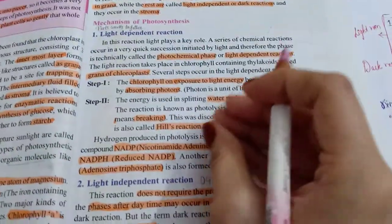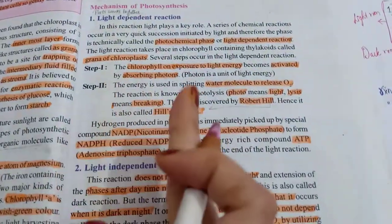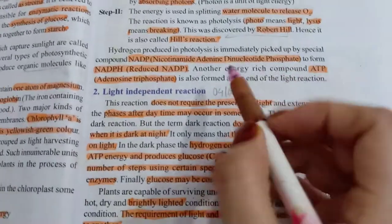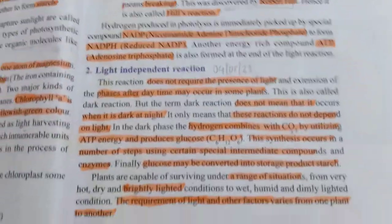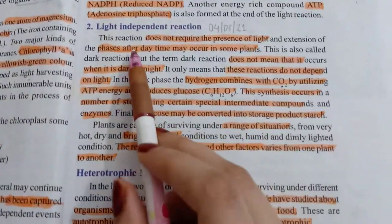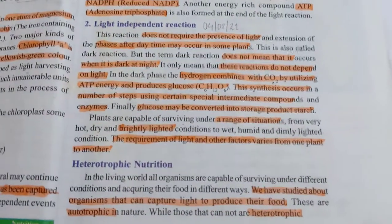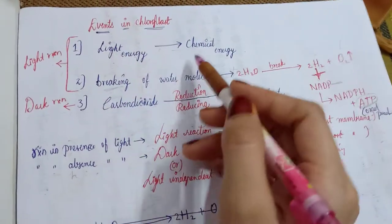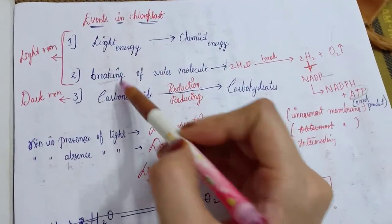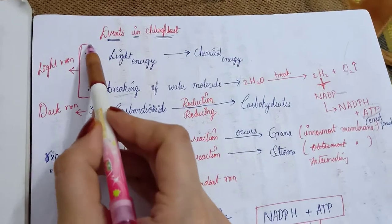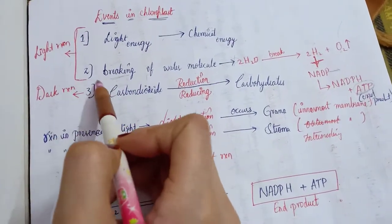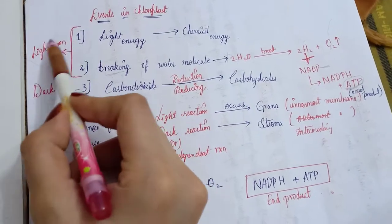In the light reaction, the reaction initiates and executes only in the presence of light, and we get our end products. Now we will start today's topic — the light-independent reaction, which is the second event. Remember: there are three events taking place in the chloroplast during photosynthesis. Out of these three events, the first two take place in the light reaction.